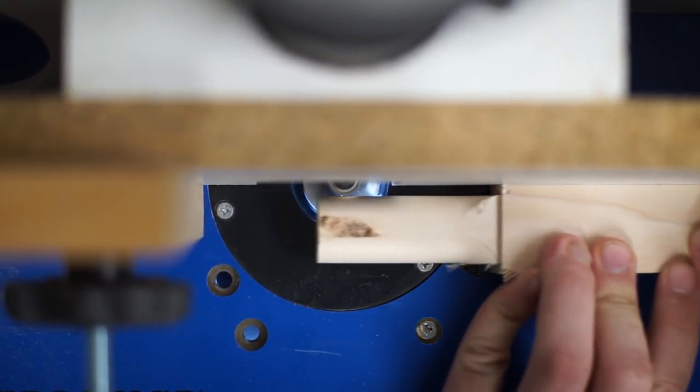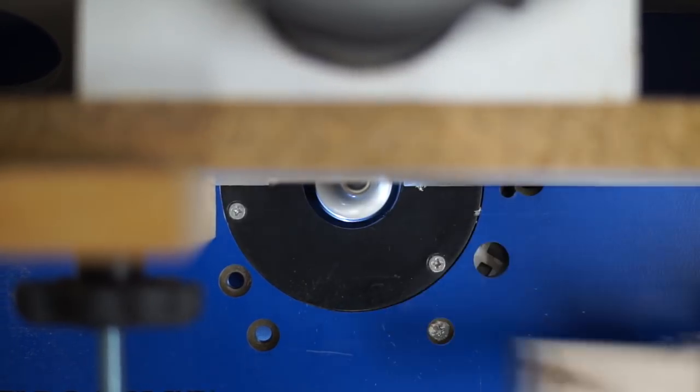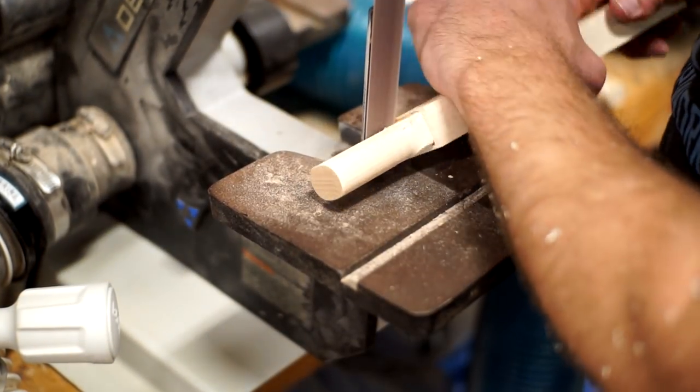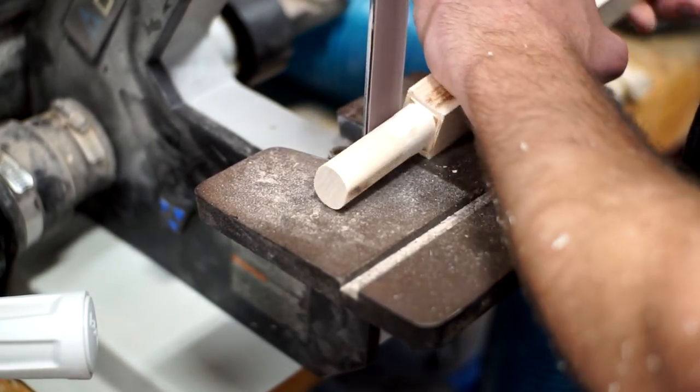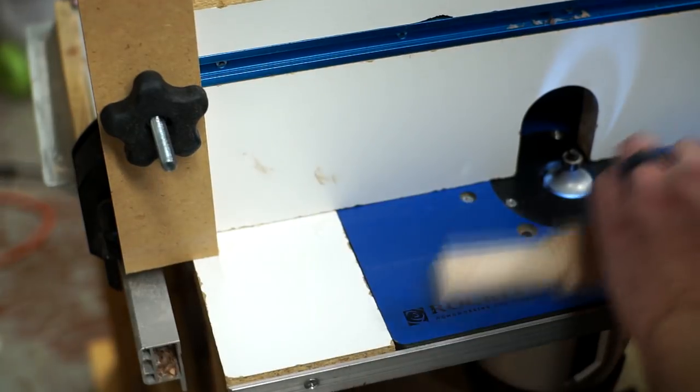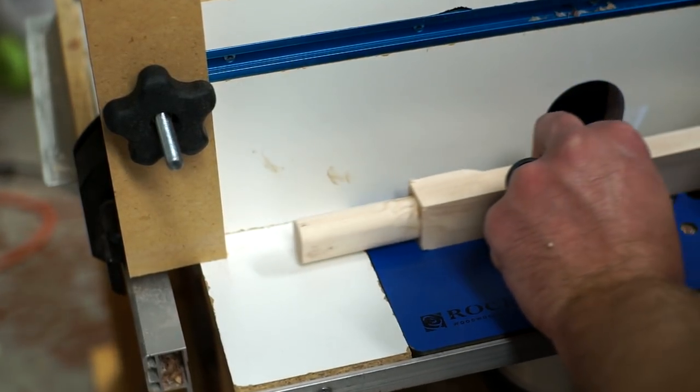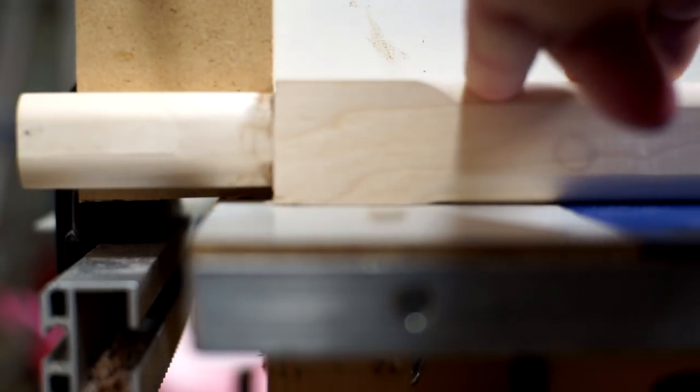Making a squared off handle would have definitely been easier, but I really liked the way this thing was flowing with the rounded edges and I decided to carry that off into the handle. This was definitely worth the extra effort. Stops on both ends of my fence allowed me to get very accurate cuts all the way down the handle on all four sides.